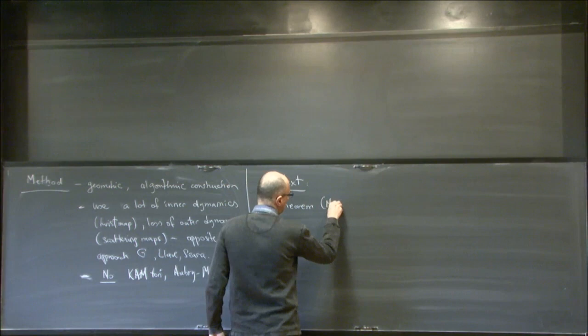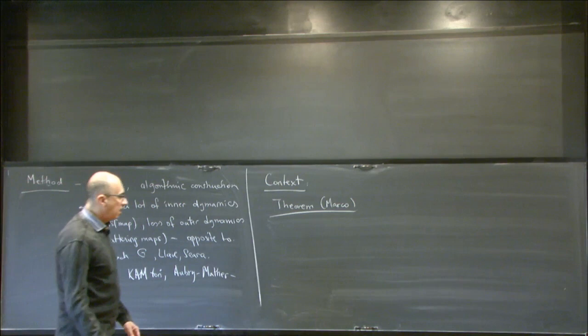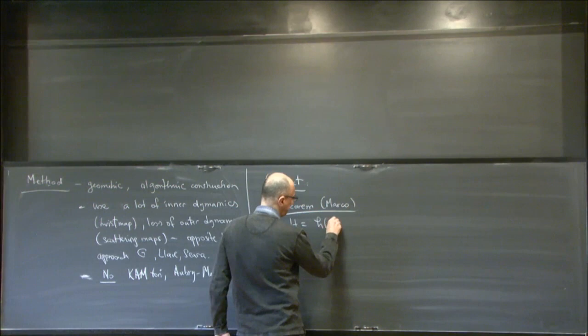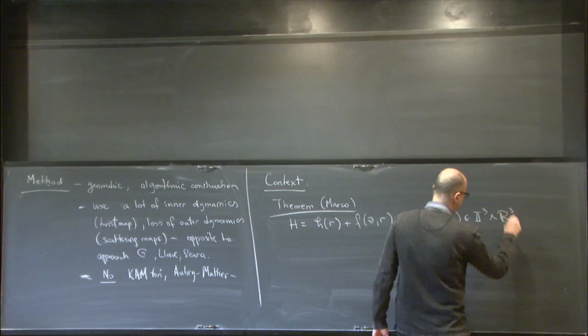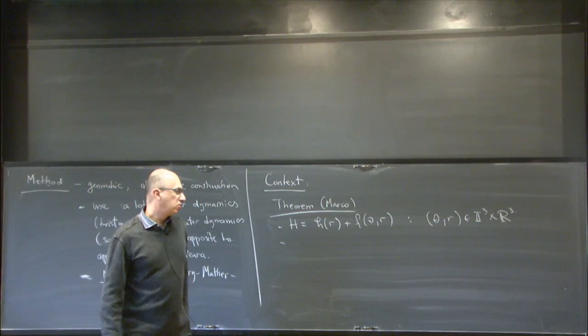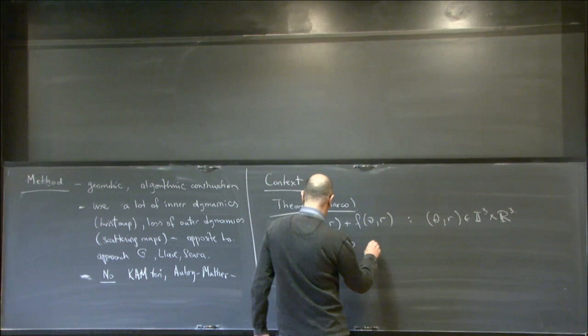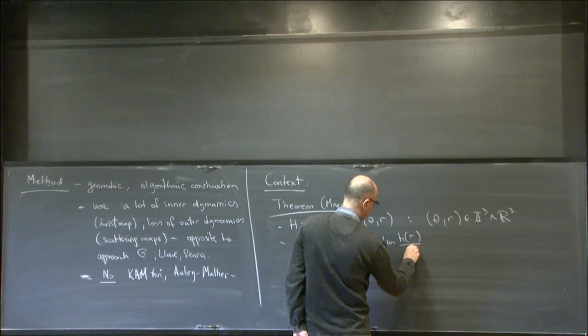Let me give the context. This is a theorem by Marcaux. The assumption is that you have a Hamiltonian system of three degrees of freedom. The unperturbed Hamiltonian is supposed to be positive definite and superlinear. The Hamiltonian is C^r, where r is large enough.